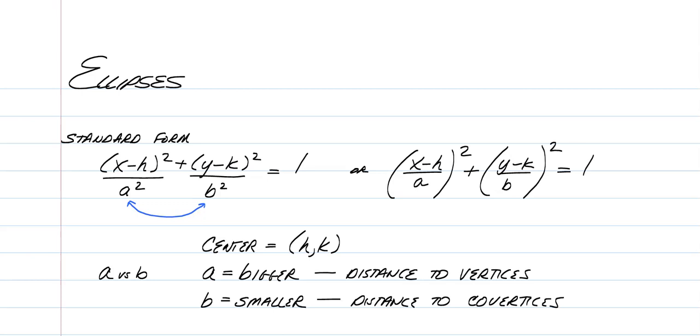In a circle, everything was equal to a radius squared. In ellipses, everything's going to be equal to 1 for a very good reason, and you'll see as we move on.